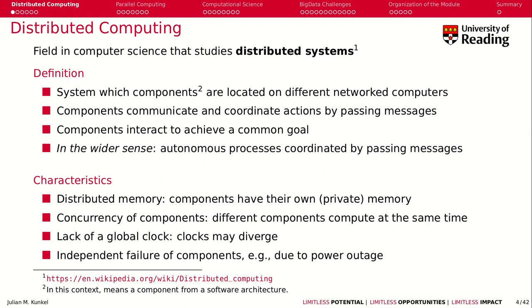'Distributed' means a system whose components are located on different networked computers. You have those systems that are connected together using some kind of network — which could be a wireless network, 3G, 4G, 5G, or even a physical cable. These components that the computer system is comprised of communicate and coordinate together by exchanging messages.